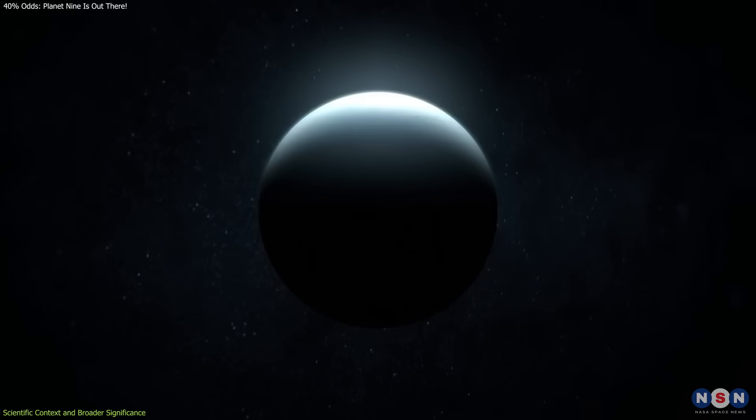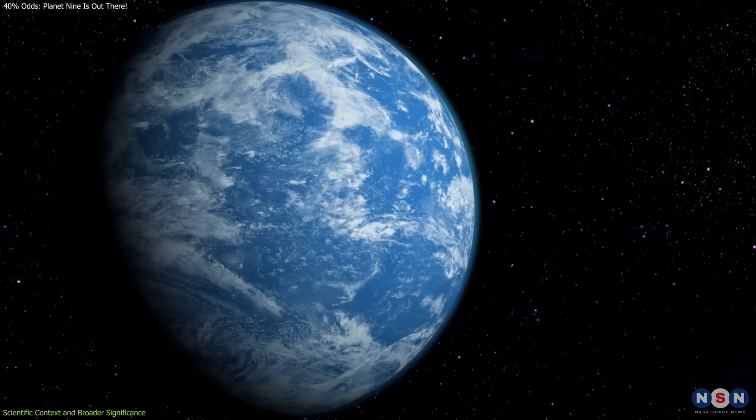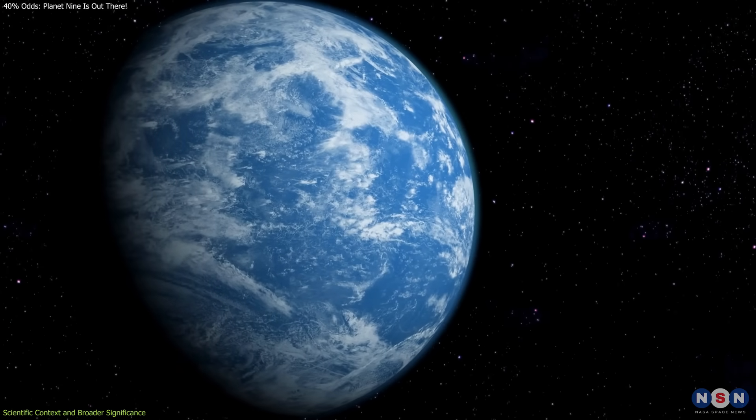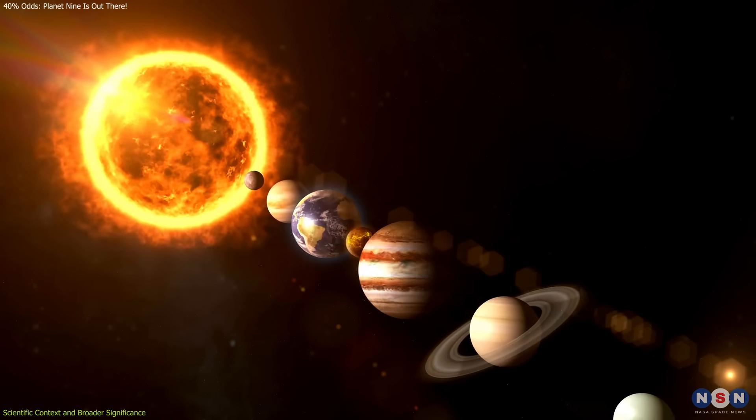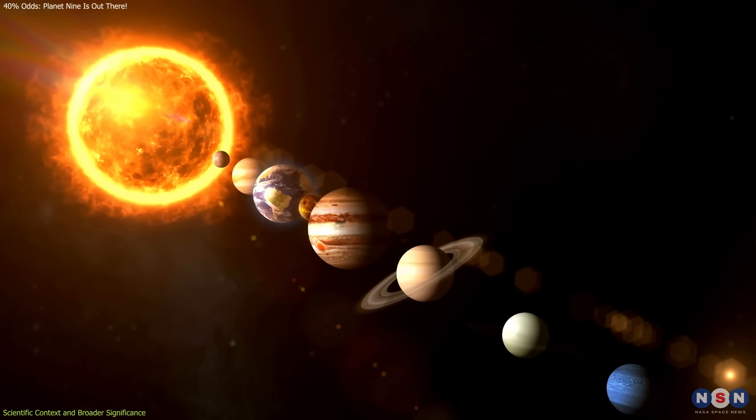Yet our solar system has none. Planet 9, if it exists, would fall into this mass range and could resolve this inconsistency by filling the structural gap in our planetary lineup.